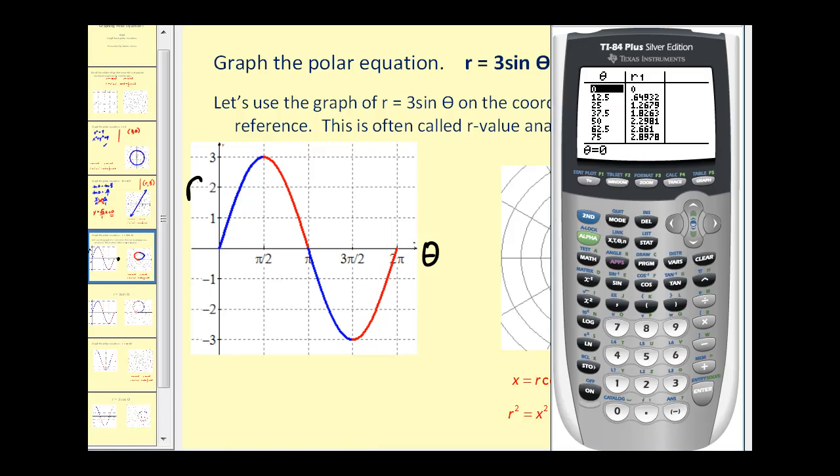Let's also take a look at this on the graphing calculator. I've already typed in r equals three sine theta. And I've already set up the window. We're in degrees, the step is five degrees at a time. Let's go ahead and graph it.